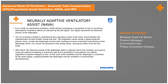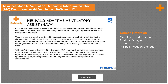The last mode to discuss is NAVA — Neurally Adaptive Ventilator Assist. This is a specific mode used in Maquet equipment. It functions essentially as a faster trigger. An additional sensor is introduced that gives the diaphragmatic voltage, called the EDI signal. As soon as the diaphragm starts to flutter — meaning the patient is about to take an effort — an electrical signal is generated and sent to the machine, which immediately starts the flow.